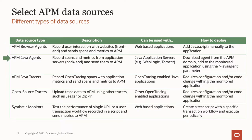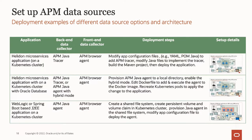The APM Java agent can be used to collect spans and metrics from J2EE application servers such as WebLogic, Tomcat, or JBoss. First, download the Java agent installer from the APM domain, then provision and deploy it using the command-line interface. The APM Java tracer can be used with Java applications having OpenTracing enabled — you need to edit configuration files and Java files to deploy the tracer. APM also supports non-Oracle open-source tracers such as Jaeger or Zipkin for OpenTracing-enabled applications. Synthetic monitors are used for synthetic monitoring — you create a test script with a specific transaction workflow that runs periodically and sends information back to APM.